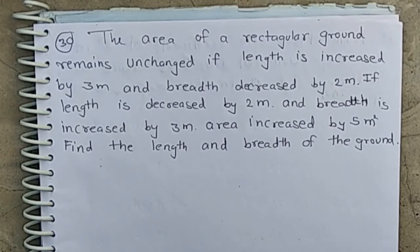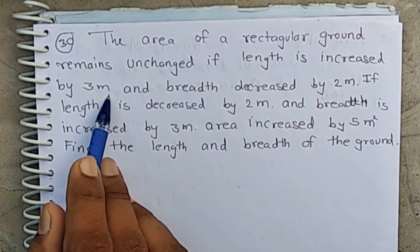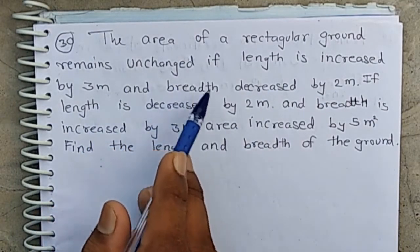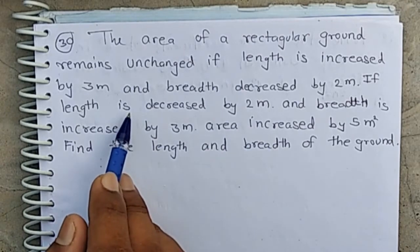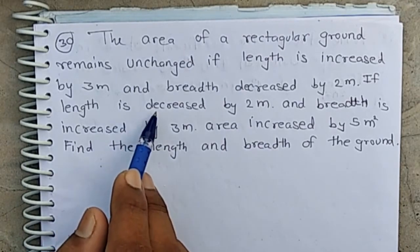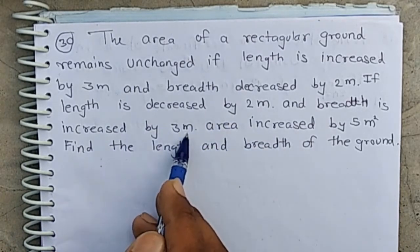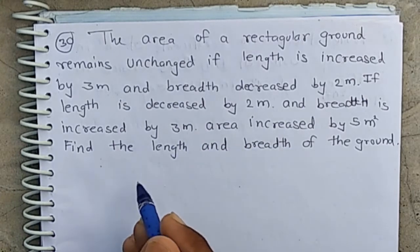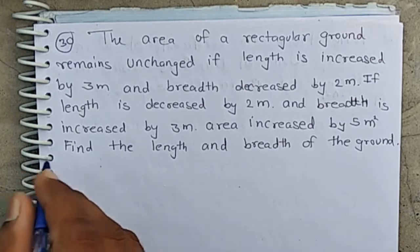Question number 30. The area of a rectangular ground remains unchanged if the length is increased by 3 meters and breadth is decreased by 2 meters. If length is decreased by 2 meters and breadth is increased by 3 meters, the area increases by 5 meter square. Find the length and breadth of the ground.